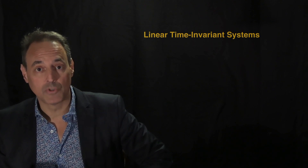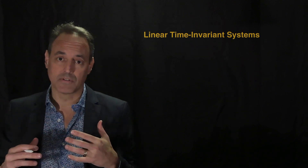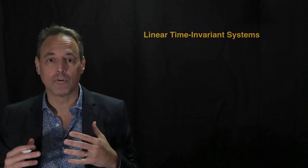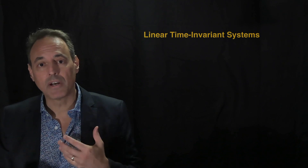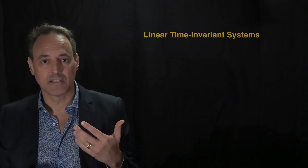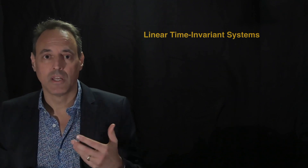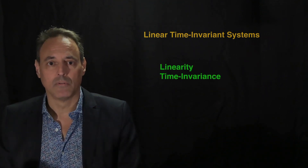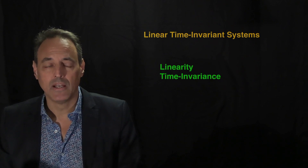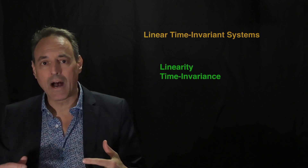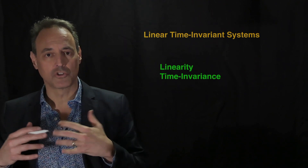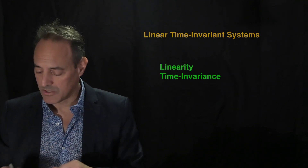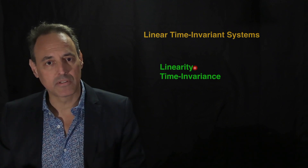We've already talked about different properties that systems can have, and now we're bringing together two of them — the linearity property and the time invariance property — to start studying a class of systems that become very important for us in practical applications. Linearity essentially allows us to construct solutions, and if we have solutions we can add them together to make new solutions. That property is critically important.